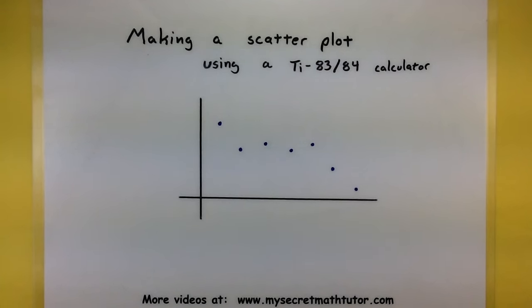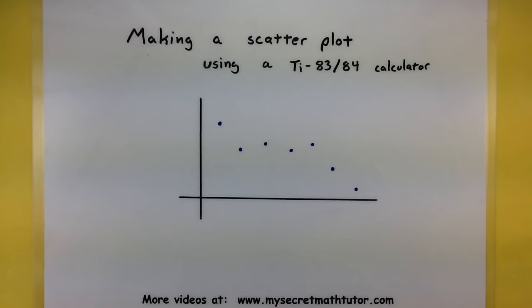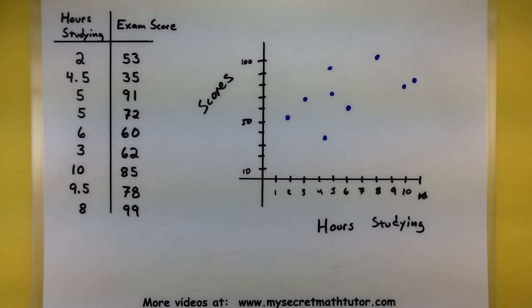Hello and welcome to My Secret Math Tutor. In this video I'm going to show you how to make a scatter plot using your TI-83 or 84 calculator. A scatter plot, of course, you'll have a whole bunch of different data points, and we just want to figure out how do we get this into the calculator and actually show us all of these data points so we don't necessarily have to go through all the work of plotting them all out. Well, in another video, I went through this entire process by hand, but we're going to do that same example just using our calculator. So, let's go ahead and get it and see how we can do this.